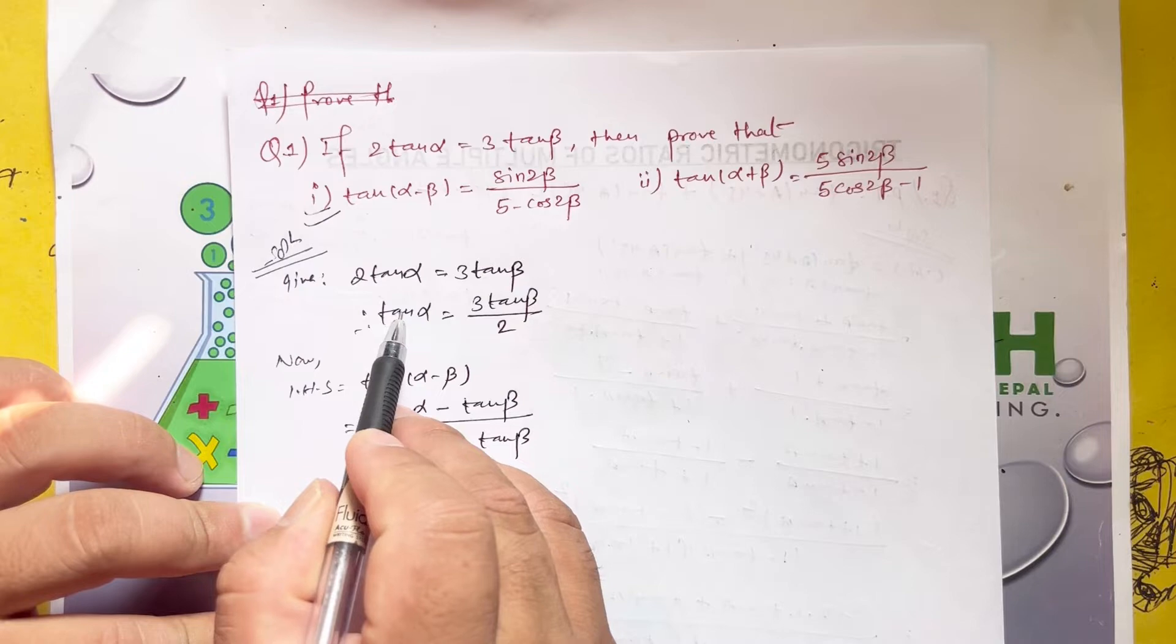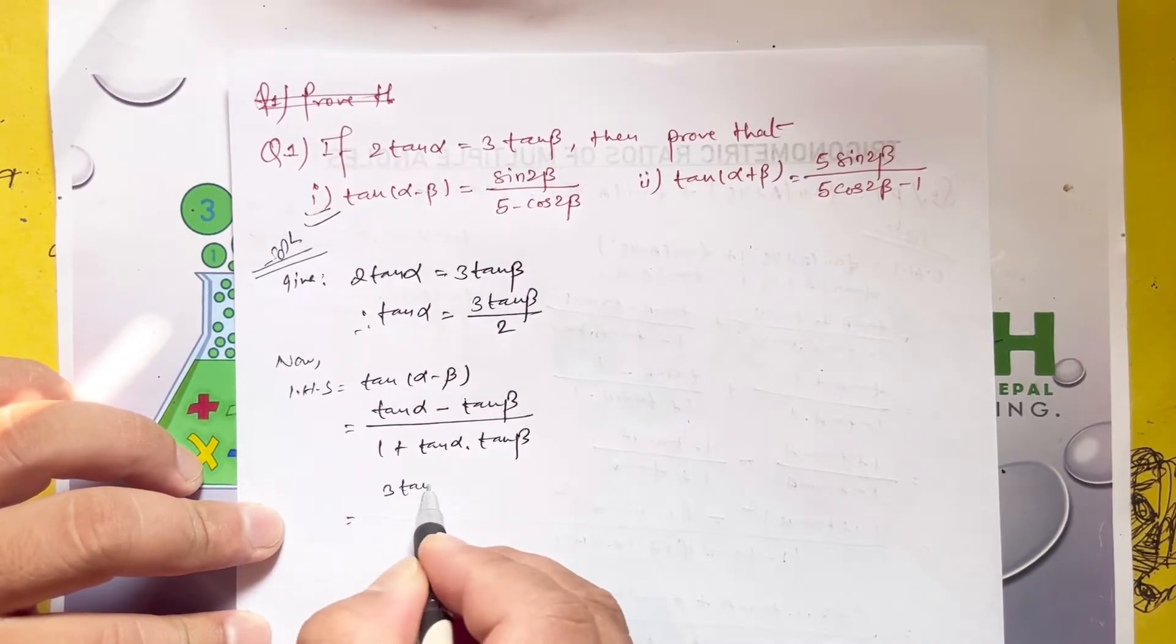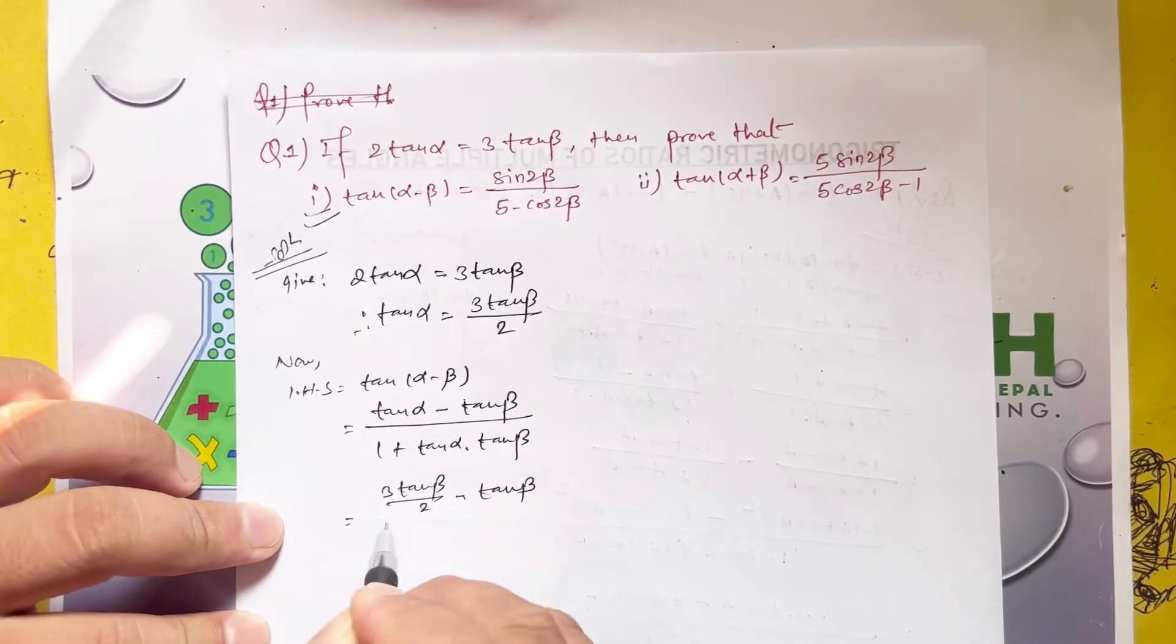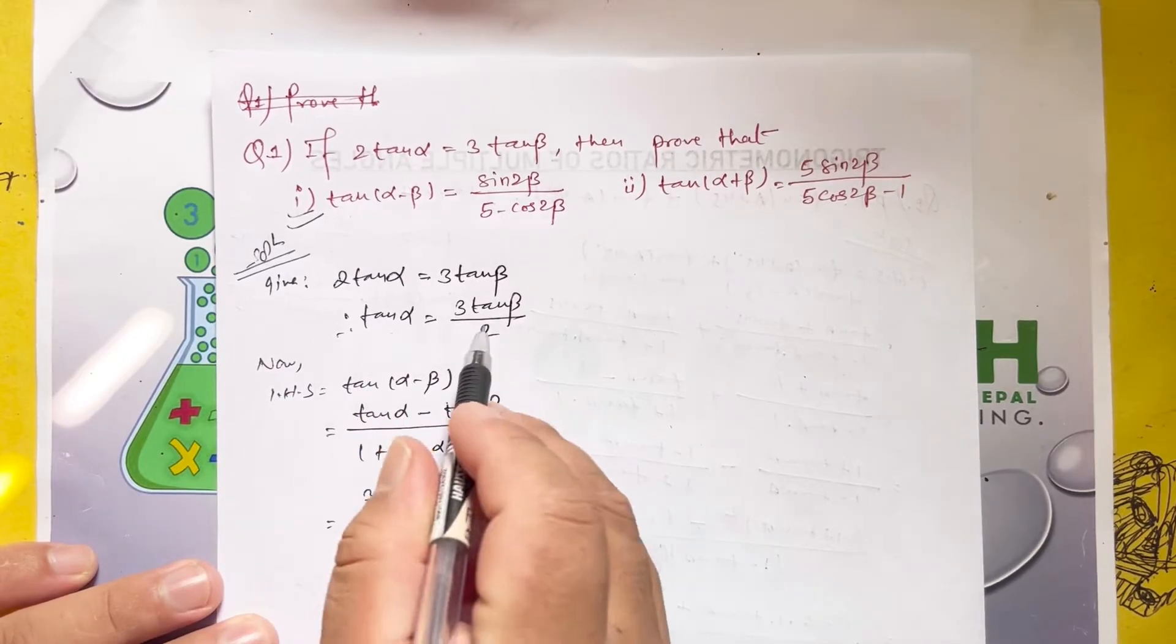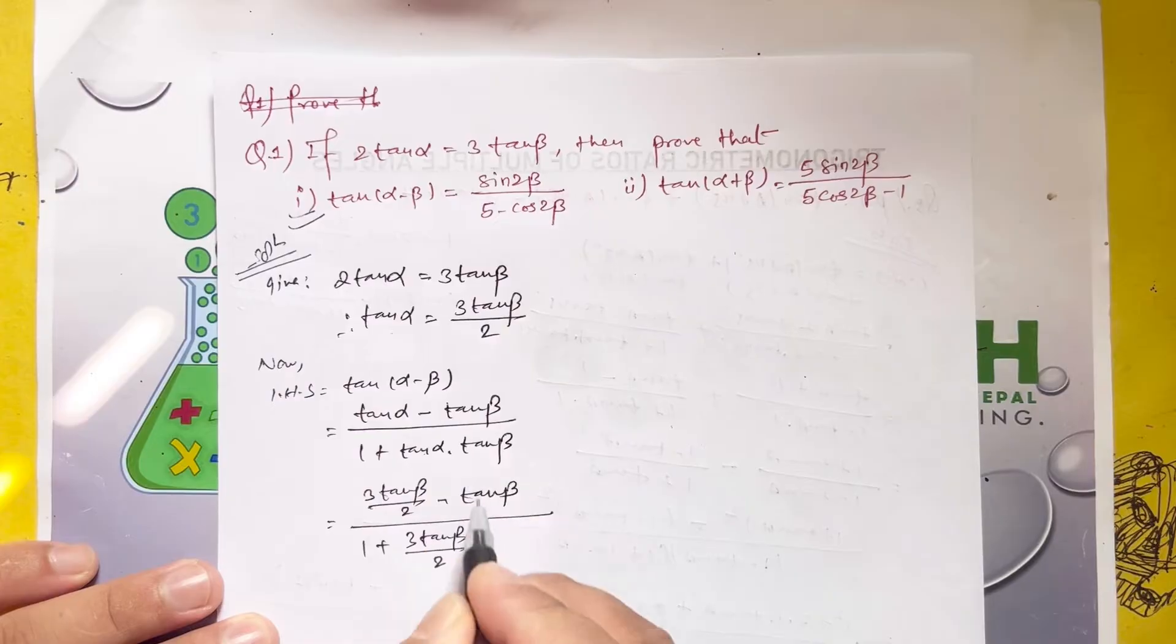Since tan alpha equals 3 tan beta by 2, the LHS becomes 3 tan beta by 2 minus tan beta, divided by 1 plus 3 tan beta by 2 times tan beta.